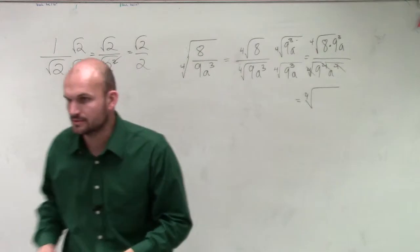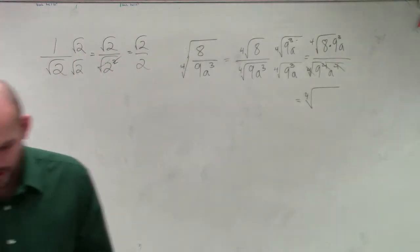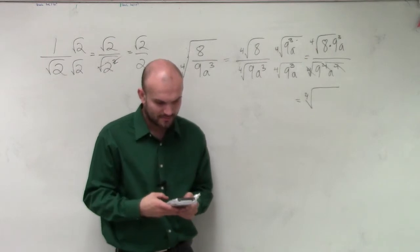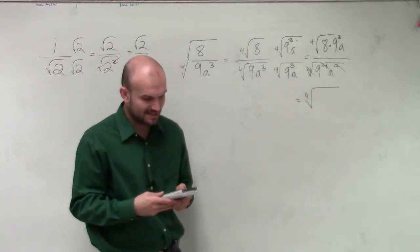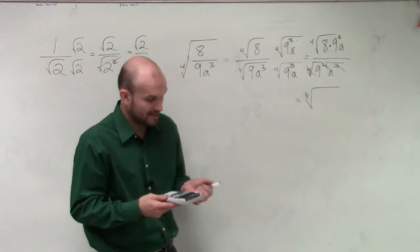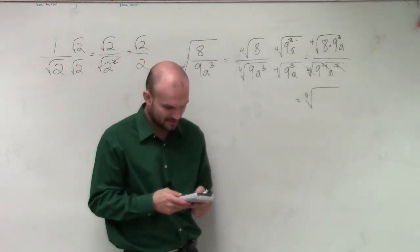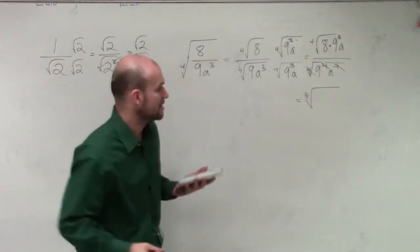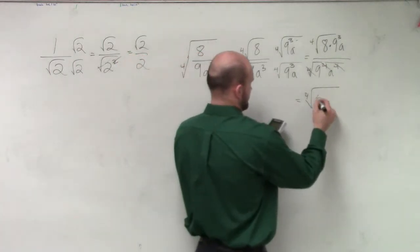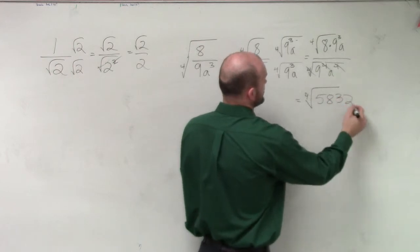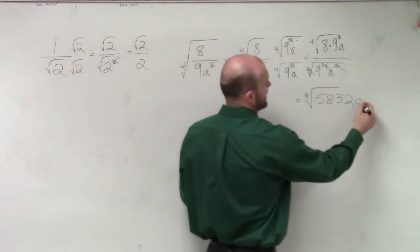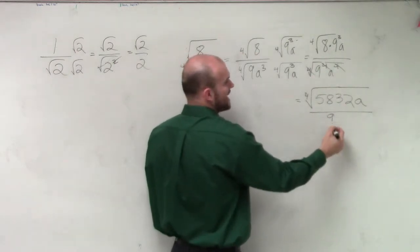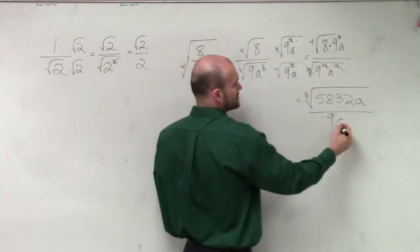So we do 9 cubed. I don't know 9 cubed off the top of my head. So 9 cubed is 729 and then times 8. And then I'm just going to go and check to see if I can take the fourth root of that, which I can't. So I'm just going to leave my answer as the fourth root of 5,832a over, we already figured out the fourth root of 9 to the fourth is just 9, and the fourth root of a to the fourth is just a.